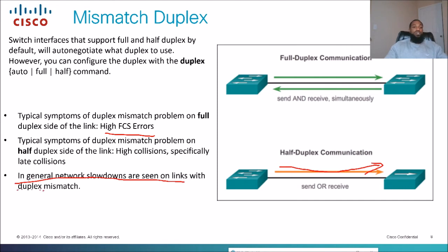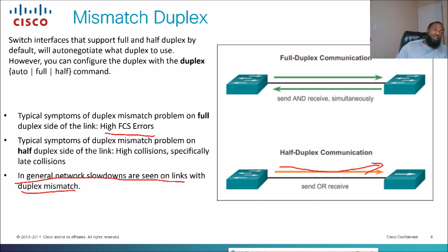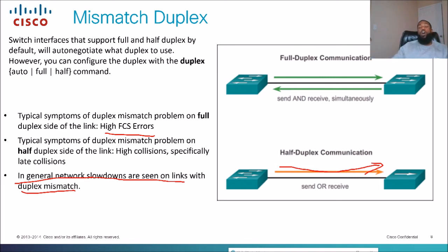General network slowdowns are seen on links with duplex mismatch — when one side is half and the other is full duplex, you'll see errors, bottlenecking, and all kinds of issues. That's why we want to set it to auto for the most part. Sometimes you might have to hard code — for example, if you have a printer connected that can only run half duplex, you'd need to set the switch port to half duplex as well.